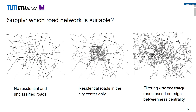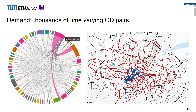We came up with an algorithm that filters out unnecessary roads based on a metric from graph theory called betweenness centrality, which I will talk about later. We thought we don't need to kick out roads based only on their location or type — we can look into their value to the network. After supply, we need some demand.